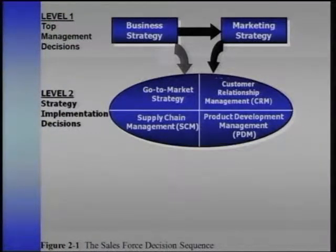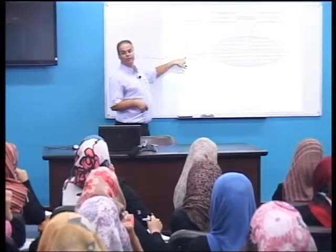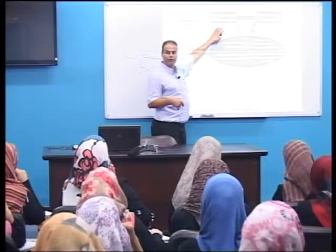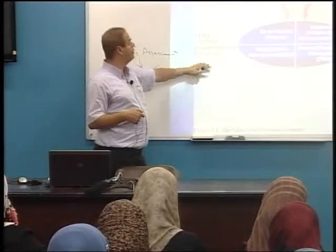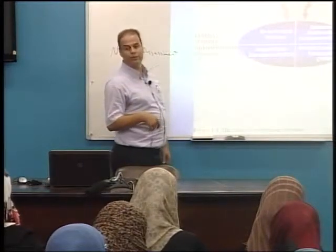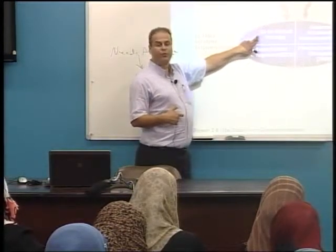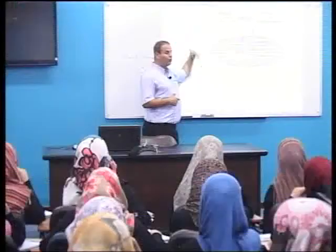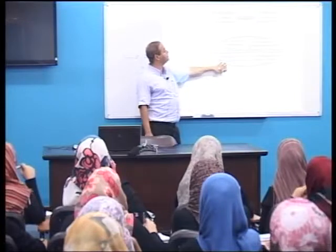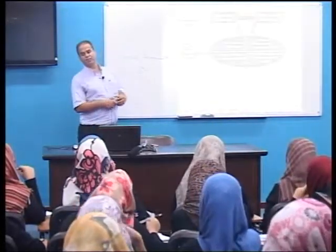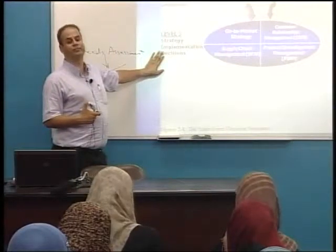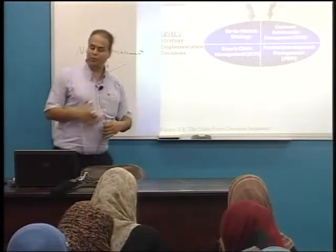Moving to level two: strategy implementation decisions. What we planned in strategies at the first level must be accompanied by actions and procedures on the ground to execute it. This level includes four approaches: go-to-market strategy, which involves field work; customer relationship management; supply chain management; and product development management. These are the four major approaches through which we express our implementation effort.